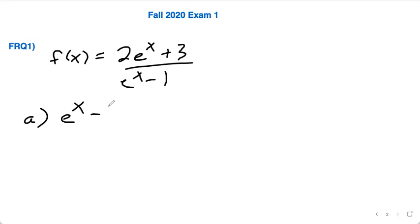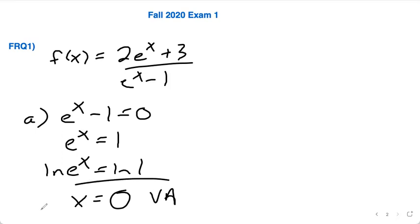Vertical asymptotes are when you set the denominator equal to 0. So you add the 1 over, you take the natural log of both sides, and you get x equals, well, the natural log of 1 is what? It's 0 for your only vertical asymptote here.